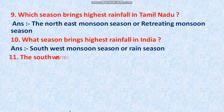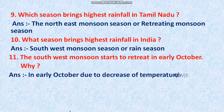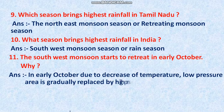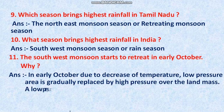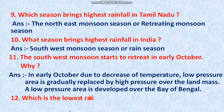Question 11: The southwest monsoon starts to retreat in early October. Why? The right answer is: in early October, due to the decrease of temperature, the low pressure area is gradually replaced by high pressure over the land mass, and a low pressure area is developed over the Bay of Bengal.